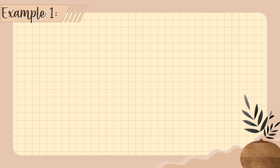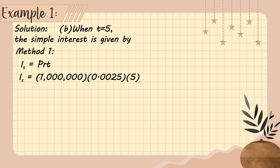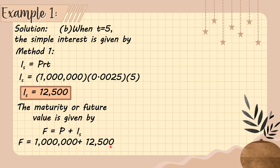Now let's solve for B, when time is equal to 5. The simple interest is given by method one: principal 1,000,000 times rate 0.0025 times time 5. Multiplying all three, that gives us 12,500. So the interest on P1,000,000 at 0.0025 for 5 years is 12,500. Using the maturity value formula F equals P plus I sub S, we have 1,000,000 plus 12,500. Therefore, the maturity value is P1,012,500.